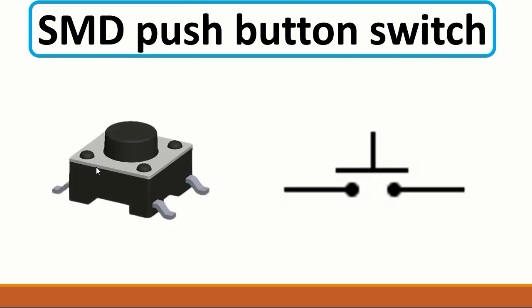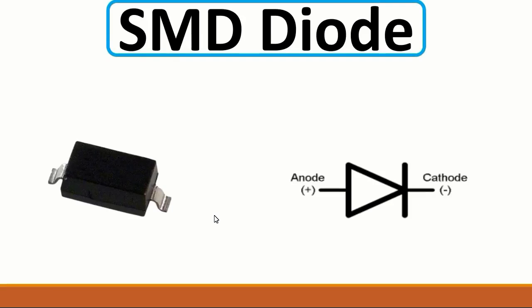Next we have push buttons — this is straightforward. A push button has two connectors and a push part. After that, here we have a regular diode. This is a normal diode; you can use the same testing principle as with the Zener diode to check it with a multimeter. The anode is always the positive terminal and the cathode is the negative terminal. The cathode is identified by a line marked on the component. This kind of diode is also used for protection purposes.